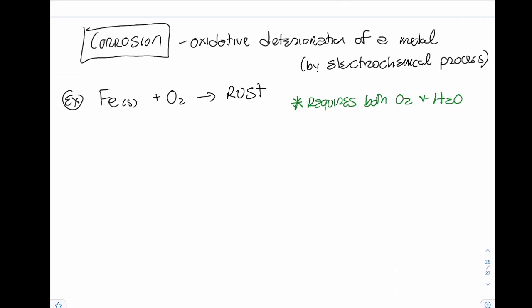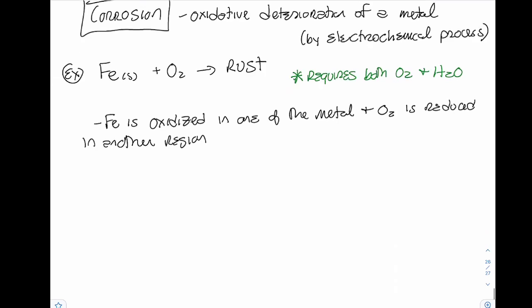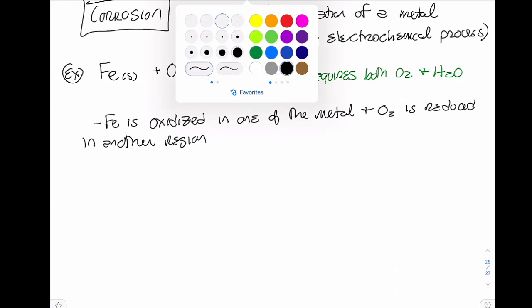Corrosion is an electrochemical process. Iron is oxidized in one region of the metal, and oxygen is reduced in another region. Similar to how we separate oxidation and reduction in Daniel cells, these processes happen in slightly different regions on the same piece of metal. This creates pits where iron is oxidized, and rust is deposited at a different location.